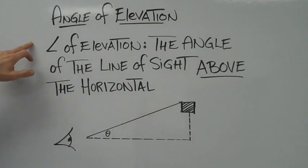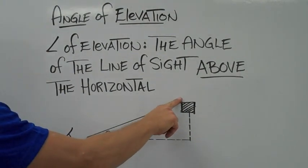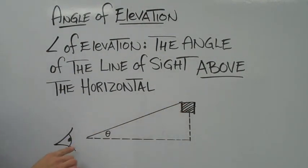The angle of elevation is the angle of the line of sight above the horizontal. If here is a horizontal line and you've got an eyeball here and you're trying to find the corner of this box, then the angle of elevation is the angle between the horizontal and your line of sight above the horizontal. That's angle of elevation.